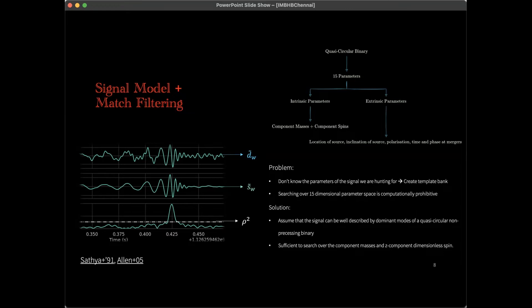The real problem is that at the current epoch it is computationally infeasible to search over a 15-dimensional manifold. Therefore, we are forced to make a simplifying assumption, namely that the signal at hand is well described by the dominant modes of a quasi-circular non-precessing binary. Under this assumption, one can show that it is sufficient to search over just the component masses and the z-component of the spin vector.